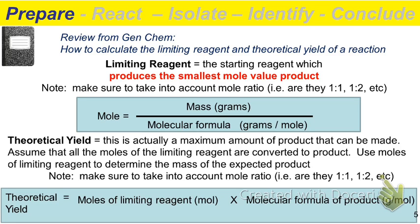To figure out your limiting reagent, you're trying to find the starting reagent that produces the smallest mole value of your product. Once we reach that limit, we can't produce anymore. What you have to do is go through and do a conversion, just like you did in Gen Chem — convert the moles of your starting material into moles of product. But typically in lab we measure grams, so the first thing we do is convert those grams into moles by dividing mass by molecular weight.